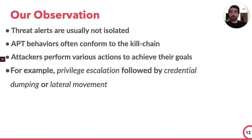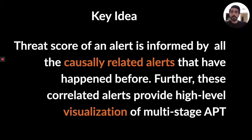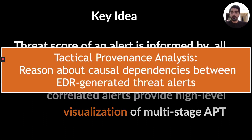We built RAPsheet based on the observation that threat alerts are usually not isolated. APT attacks usually conform to a kill chain where attackers perform various actions in a certain order to achieve their goal — for example, privilege escalation followed by credential dumping. If we can piece together these causally related actions or alerts, we can do much better risk assessment. We give threat support to each generated alert based on all causally related alerts that happened before the candidate alert. Moreover, correlating these threat alerts provides security analysts a compact visualization of the multi-stage APT attack, which can accelerate investigation. To reason about causally related alerts, we introduced the notion of tactical provenance analysis, derived from classical data provenance analysis.